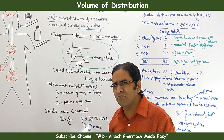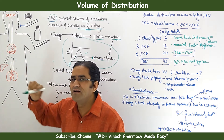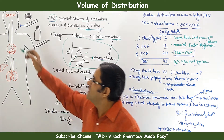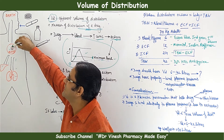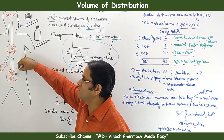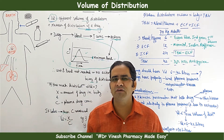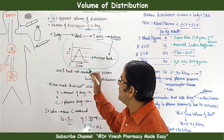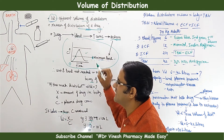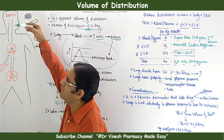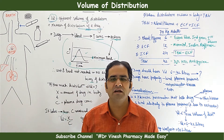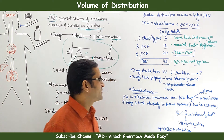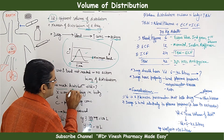As soon as the drug enters, distribution also occurs — the reversible transfer of drug between blood and body compartments. When the drug enters the central compartment, it is distributed to other organs as well. How much is distributed depends on many factors. The minimum level is very important; as soon as the drug arrives and is distributed, we need to know how much has been distributed.